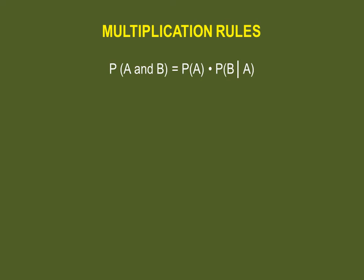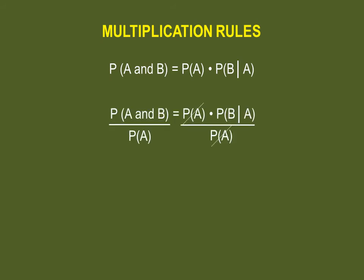Is it possible to find the probability of event B happening if we only have the probability of both events occurring and the probability that event A occurs? Of course. All we have to do is divide both sides of our multiplication rule by the probability of A occurring. On the right-hand side, the probability of A cancels itself. So what you're left with is the probability of A and B occurring divided by the probability of event A, which equals the probability of event B occurring.